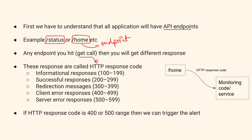To understand this better, consider calling someone via your mobile phone. You will get some status — either they pick up, cut your call, send an automated response, or you get a message because they are out of network range. Similarly, every API endpoint gives back what we call an HTTP response code.